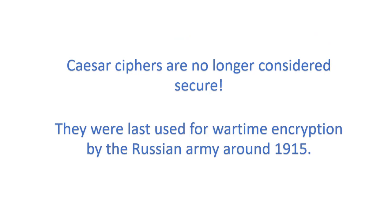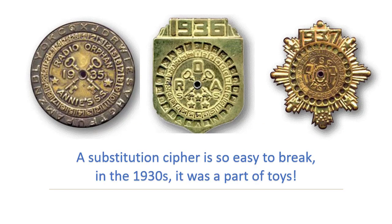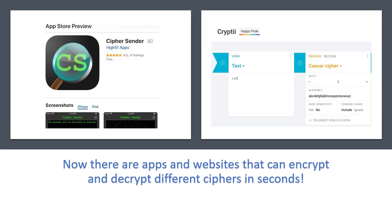Caesar ciphers are no longer considered secure. They were last used for wartime encryption by the Russian army around 1915. A substitution cipher is so easy to break, in the 1930s it was a part of toys. Now there are apps and websites that can encrypt and decrypt different ciphers in seconds.